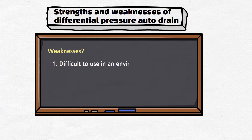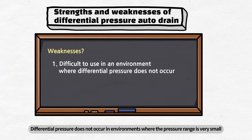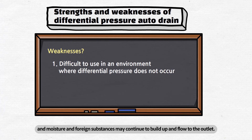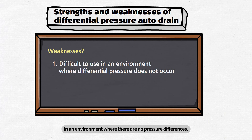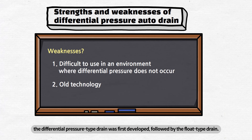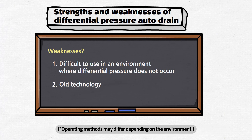The weaknesses are: first, it is difficult to use in an environment where differential pressure does not occur. In order to use a differential pressure drain, pressure differences must occur in the bowl. Differential pressure does not occur in environments where the pressure range is very small, or where pressure is constantly supplied from a large pressure tank. In such cases, the drain will not work and moisture and foreign substances may continue to build up and flow to the outlet. So the differential pressure type drain is not recommended where there are no pressure differences. Second, it is an older technique compared to the float type. The differential pressure type drain was first developed, followed by the float type. Nowadays, many companies tend to use the float type rather than the differential pressure type, and operating methods may differ depending on the environment.